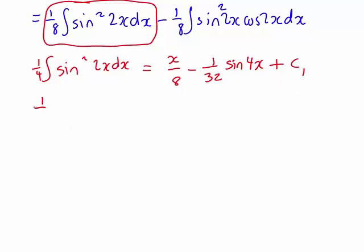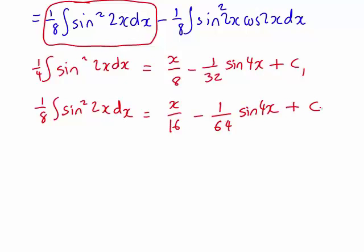Therefore, it follows that one eighth times the integral of sin squared 2x dx must just be a half of that result. That is, it must be x divided by 16 minus 1 divided by 64 sin 4x plus a constant. What I want to spend more time on is focusing on how to deal with this second part then, the integral of sin squared 2x cos 2x dx, which is also multiplied by one eighth here.